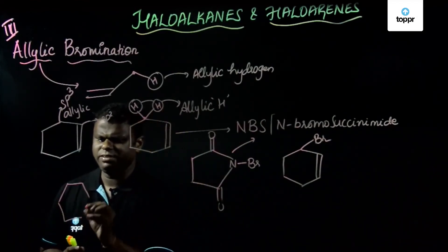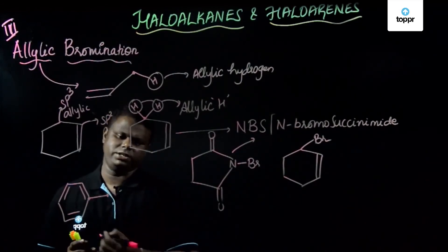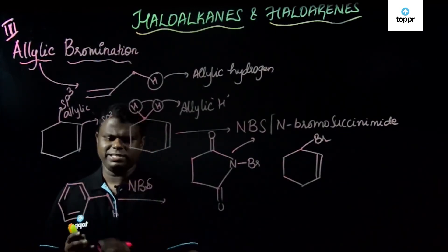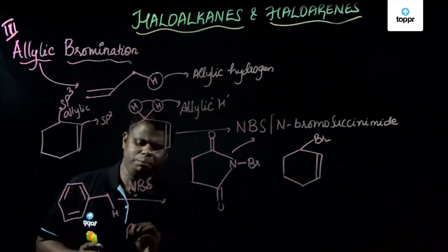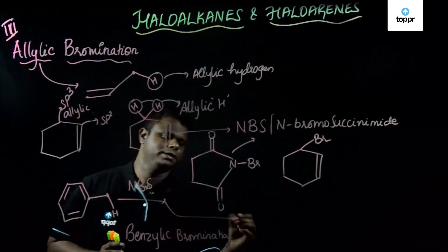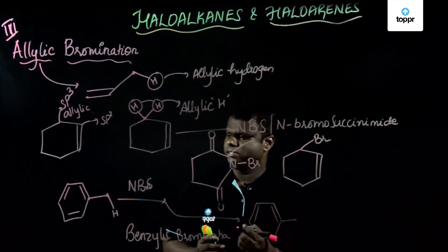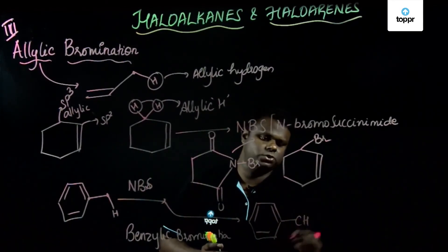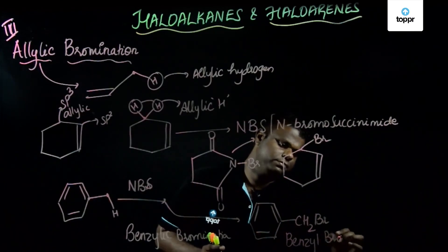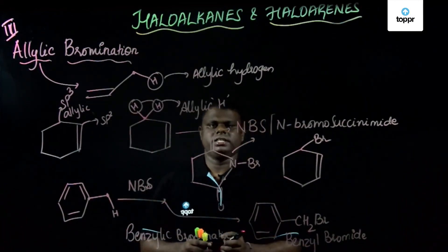Now, let's say if you have a benzene ring. This is the benzene ring with an sp2 carbon. On this sp2 carbon, there is an sp3 carbon with a hydrogen. When this is treated with NBS, it's not allylic — it is basically benzylic, so this would undergo benzylic bromination. The double bonds remain intact, and CH3 converts to CH2Br. This product is benzyl bromide. This was about allylic bromination using NBS, that is N-bromo succinamide.